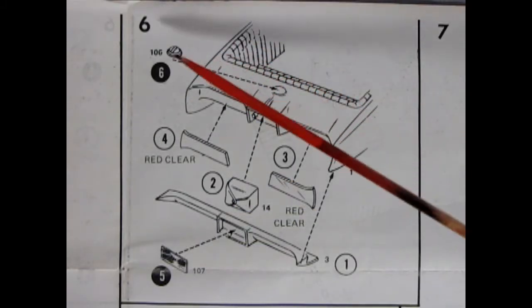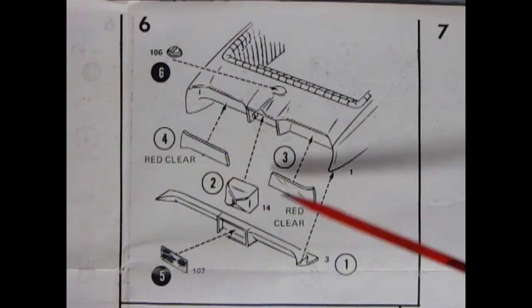Panel six shows the back end of the car going together—there's the gas cap and then we've got red tail lights as well as a drag parachute and the rear bumper and license plate.